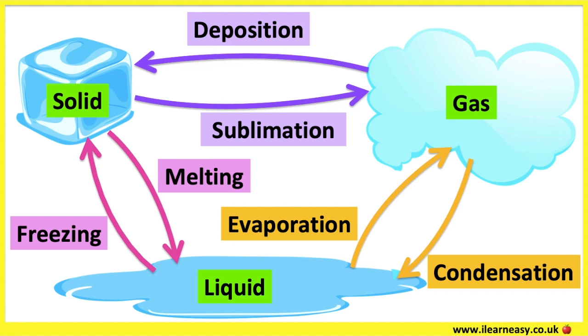For example, snow or ice can change directly into water vapour without melting first into water. This can happen directly when it's very cold and can usually happen on windows during the winter.